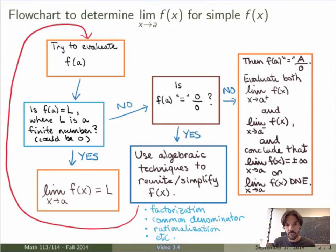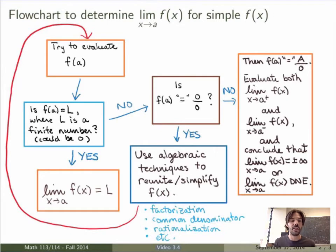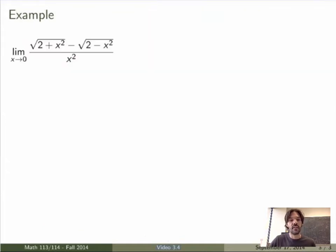What you should do is look at both the right-sided limit and the left-sided limit separately, evaluate those to see whether you get plus or minus infinity. Then you can conclude that the limit as x goes to a of f(x) is either plus or minus infinity if the two one-sided limits are the same, or it does not exist if they differ. That's a nice flowchart you can keep when evaluating limits — it tells you exactly what you should do.